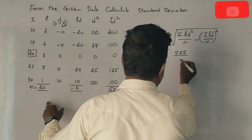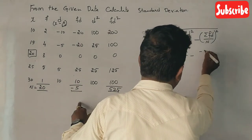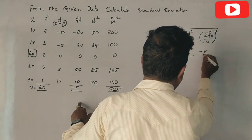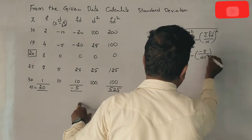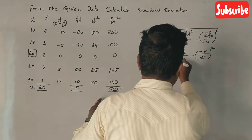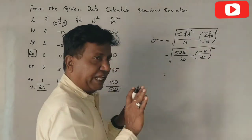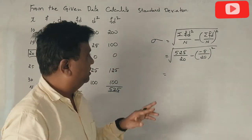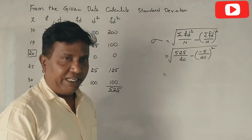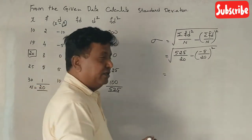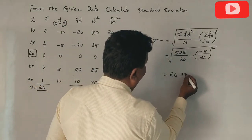Now, Σfd squared divided by n: 525 divided by 20 equals 26.25.